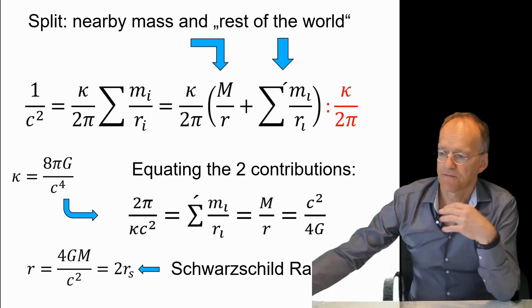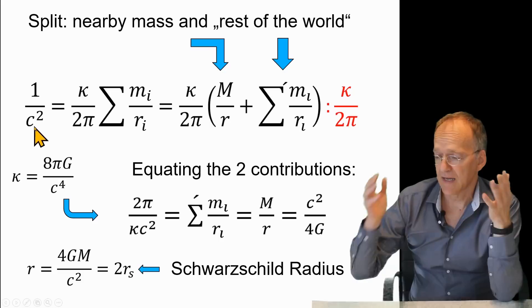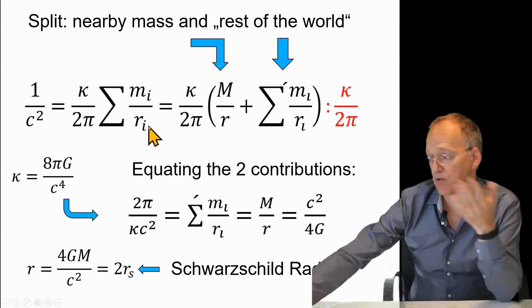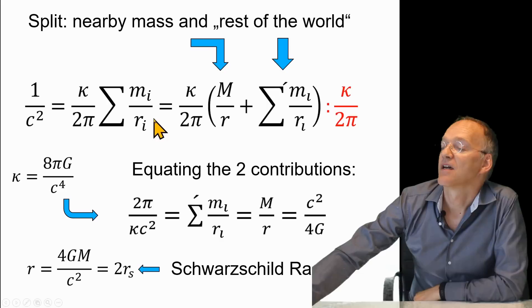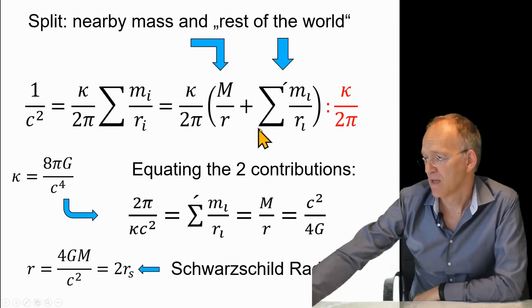If you take a closer look, if you want to make c vanish, you want to bring down this—you have to increase this term, and this is the sum. How to increase it? You can wait until the universe grows bigger and you have more masses, but the other possibility is go very close to one mass.